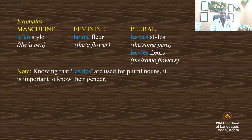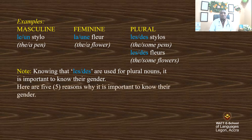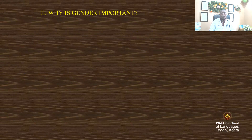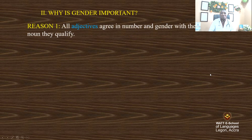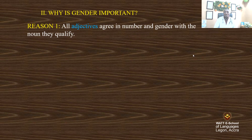Knowing that les and des are used for plural nouns, it is important to know the gender too. If you say 'the table', what is the gender of 'table'? You should know. Here are five reasons why it is important to know the gender of a noun. Let's have a look at them.